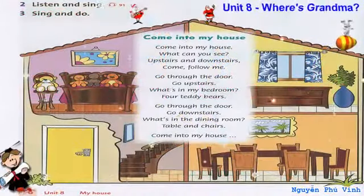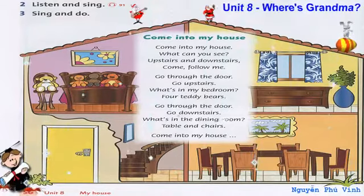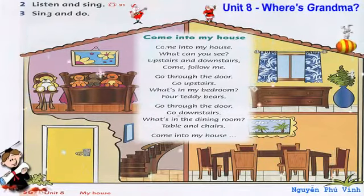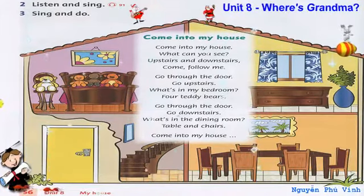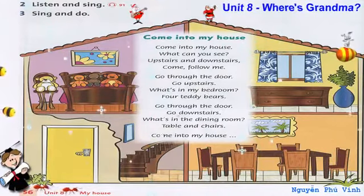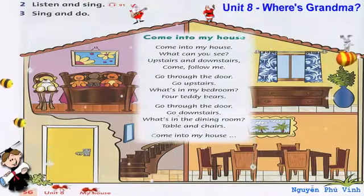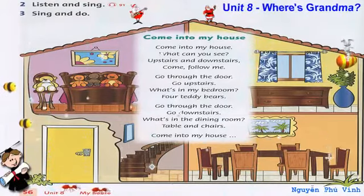Listening 91. Listen and sing: Come Into My House. Come into my house. What can you see? Upstairs and downstairs. Come follow me.